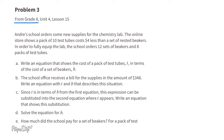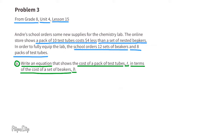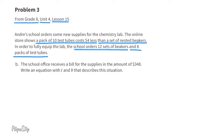Problem number three, from Eighth Grade Unit 4 Lesson 15. Andre's school orders some new supplies for the chemistry lab. The online store shows a pack of 10 test tubes costs four dollars less than a set of nested beakers. To fully equip the lab, the school orders 12 sets of beakers and 8 packs of test tubes. Write an equation that shows the cost of a pack of test tubes t in terms of the cost of a set of beakers b. A pack of test tubes is four dollars less than a set of beakers, so the equation reads: t = b − 4.